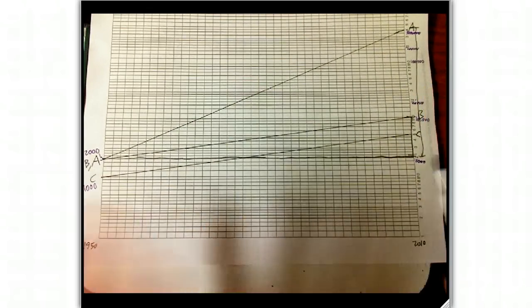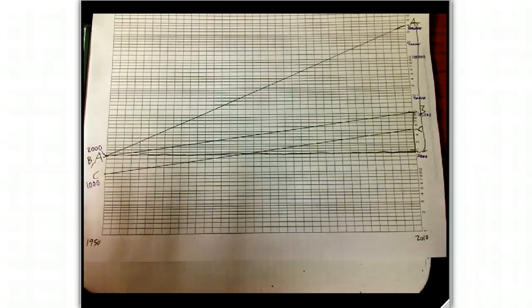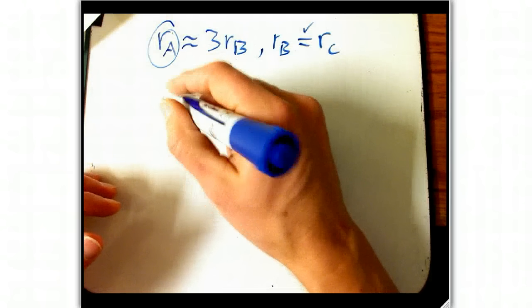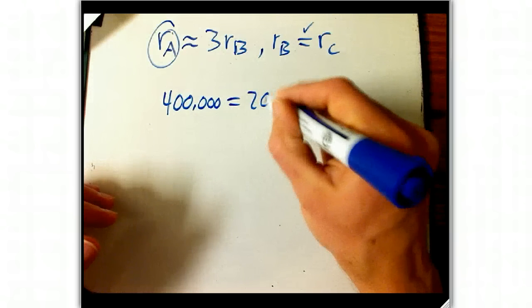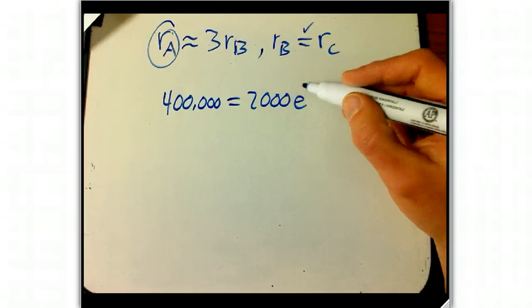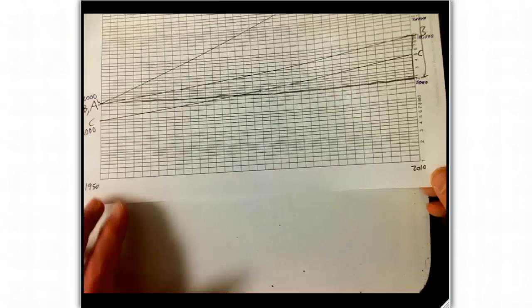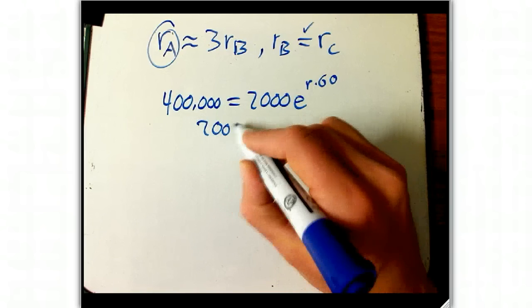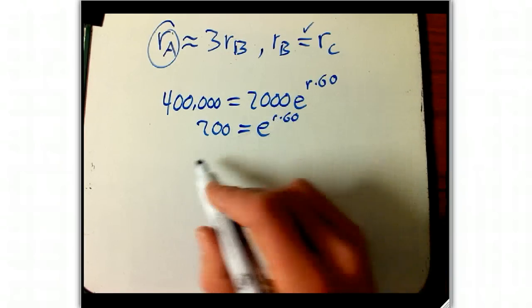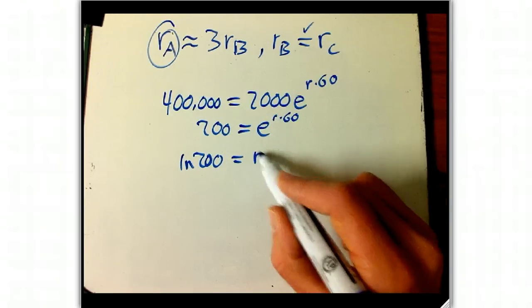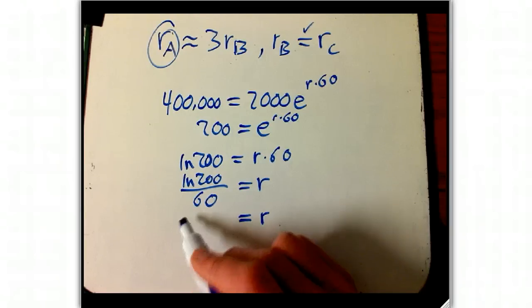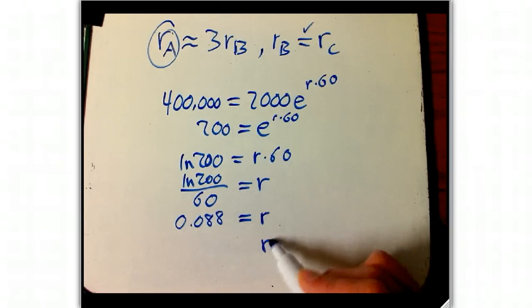Let's actually calculate R_A. We have to put it into the equations. We know it went from 2,000 to 400,000, so we plug in: 400,000 = 2,000 × e^(R × T). Assuming continuous compounding, T is 60 years (1950 to 2010). The growth factor is 200, so 200 = e^(R_A × 60). Taking the log: ln(200) = R_A × 60, so R_A = ln(200) / 60. That works out to about 0.088 — in other words, 8.8%. Starting with $2,000 and ending with $400,000 over 60 years — just by being in the stock market.